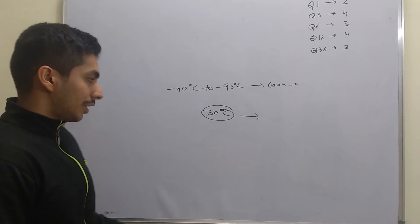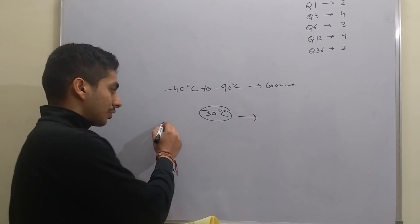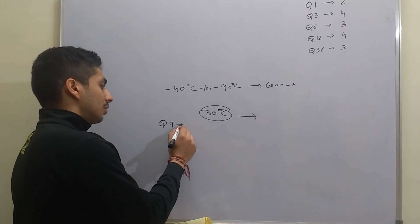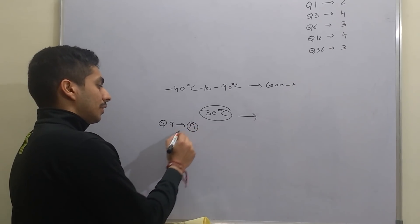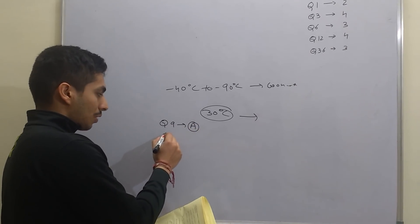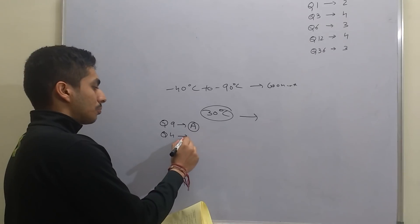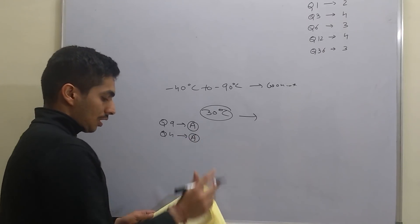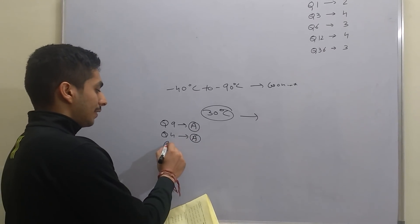The correct answer for Q9 is option number A. To summarize: question 9 answer is option A, question 4 answer is option A, and question 7 answer is option D.